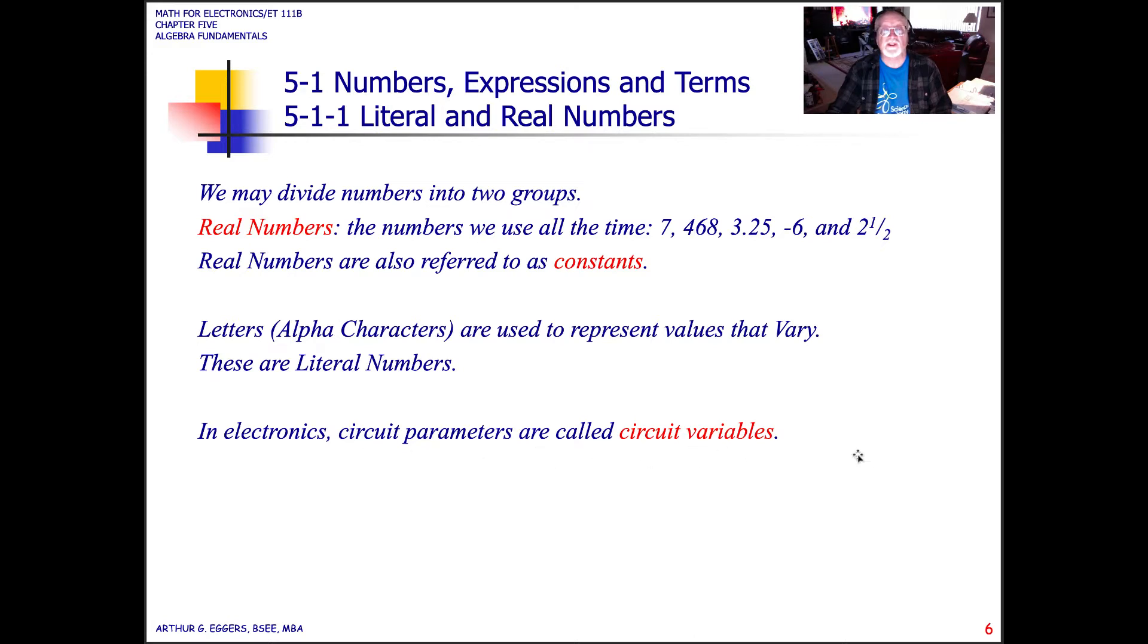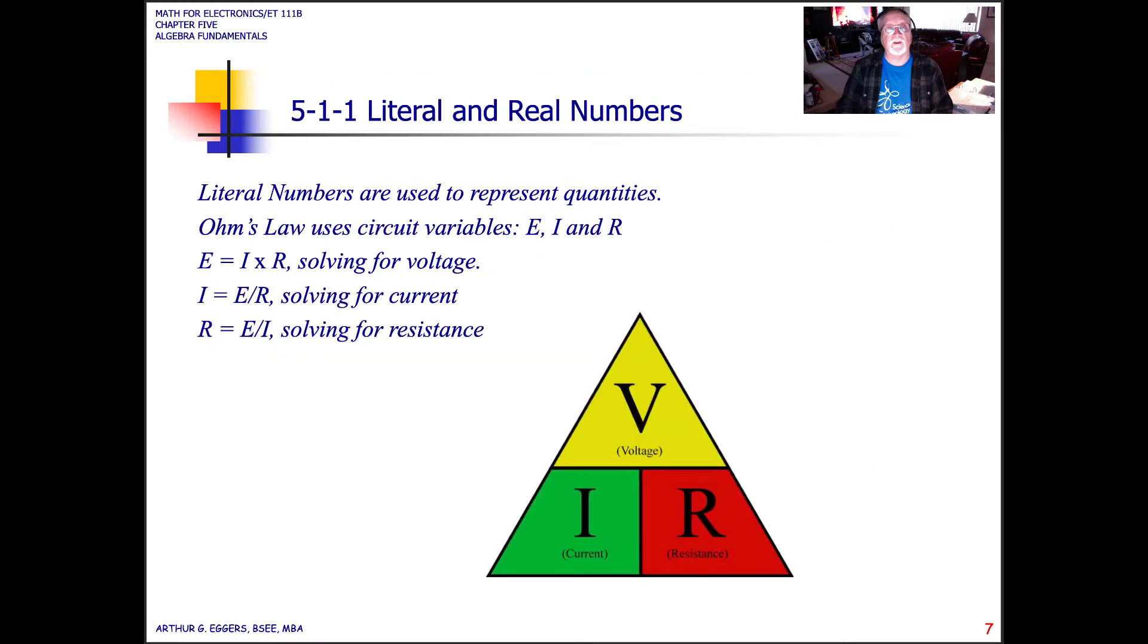In electronics, the circuit parameters are called circuit variables. If we look at an application, Ohm's Law, it can be thought of like this triangle with voltage on top and current and resistance on the bottom. This plays out very well because we're really looking at a product of the two on the bottom, giving us a current and resistance relationship for voltage. But if we look down the sides, current is equal to a quotient of voltage and resistance, and resistance is a quotient of voltage and current.